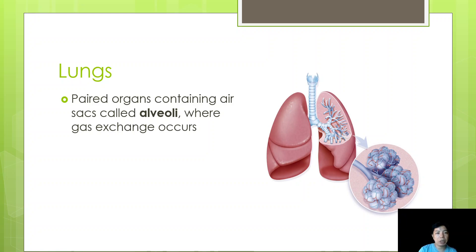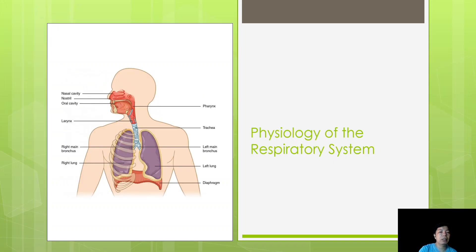The most important component of the respiratory system is the lungs — paired organs containing air sacs called the alveoli, where gas exchange actually occurs. The right lung has three lobes and the left lung has two lobes. The smallest unit of the lungs is known as the alveoli, or air sacs, where the exchange of oxygen and carbon dioxide takes place.